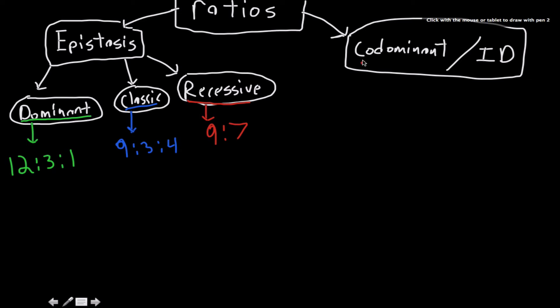So codominant ratio and incomplete dominance, they're all a 1 to 2 to 1 ratio depending on the amount of traits that we're talking about in codominance.